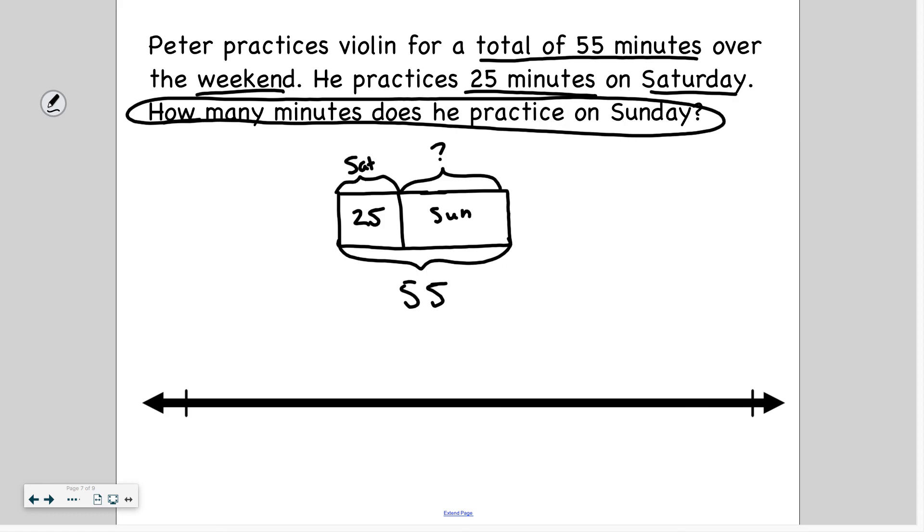We know that the whole is 55. So go ahead and copy this 55 minutes. We know that one part is 25 minutes. And that one part is Saturday. We don't know Sunday. So we're trying to figure this out. So we know the whole and we know the part. How do we figure out the other missing part? What operation would we use? So I hope you said subtraction because that is in fact the other operation. When I know the whole and I don't know one of the parts, I can use the part that I do know to subtract and find the difference.